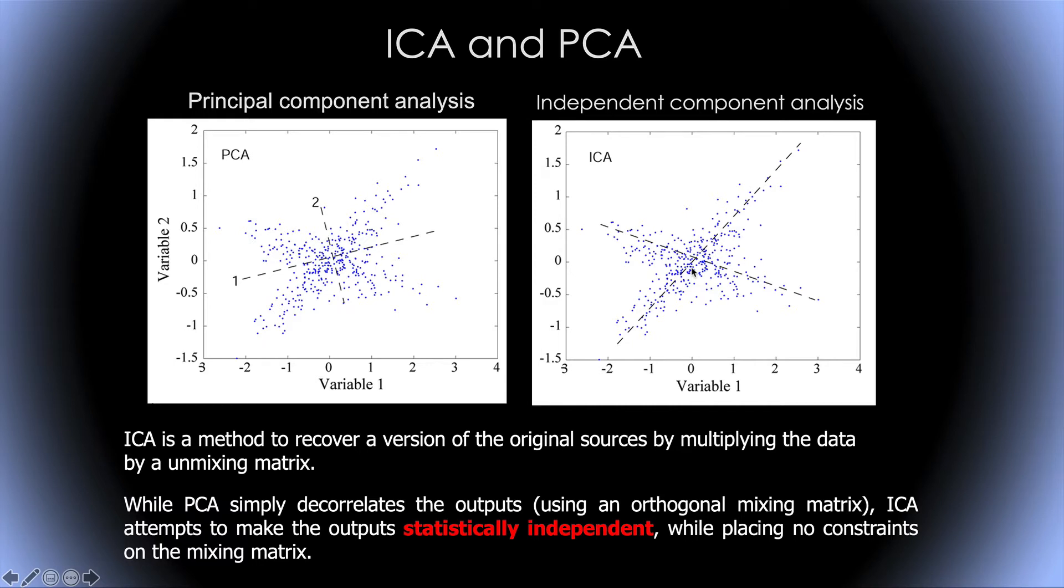ICA is a method that tends to recover the original sources. Here we can imagine that there are two processes that influence the data, one along this direction and one along this direction. By multiplying by the unmixing matrix, we can recover the activity of these sources. While PCA simply decorrelates the output, ICA attempts to make the output as statistically independent as possible, while placing no constraints on the orthogonality of the matrix.